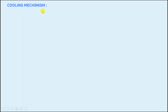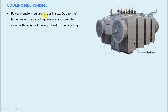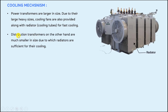The next point is the cooling mechanism. Power transformers are larger in size, so cooling fans are also provided along with radiators for fast cooling. You can see in the image that the cooling fans are provided alongside the radiators on the power transformer. Distribution transformers are much smaller in size and handle lower voltages, so radiators alone are sufficient for their cooling.